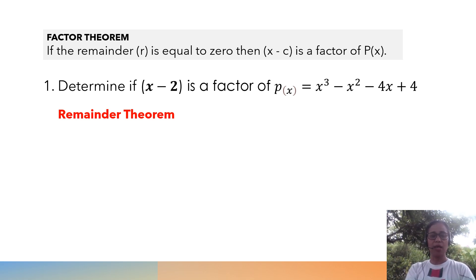Our divisor is x minus 2, so c is now positive 2. Therefore, having known that c has a value of 2, we are going to solve P(2), which means that all the x variables will be substituted with a value of 2.